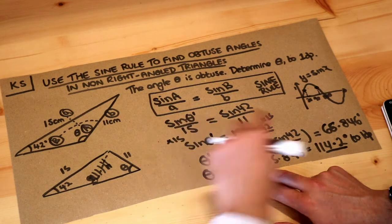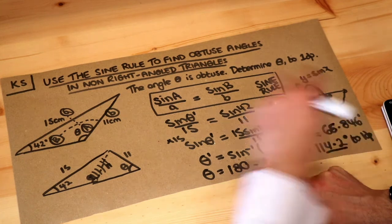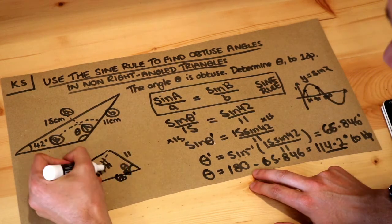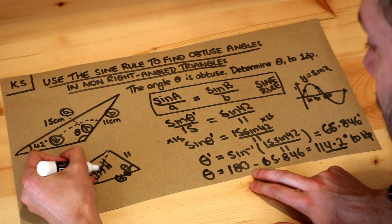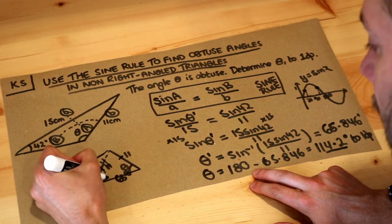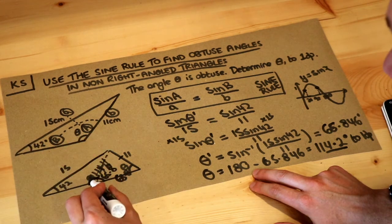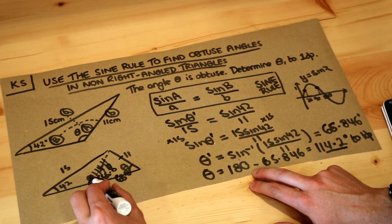Now this actually works geometrically because if we found this angle here of 65.8, because this part of the triangle here is isosceles—we've got 11 and 11—that means that this angle here is also 65.8. And then you can see that obtuse angle here, which is the one we want, this obtuse angle here is going to be 180 minus 65.8.